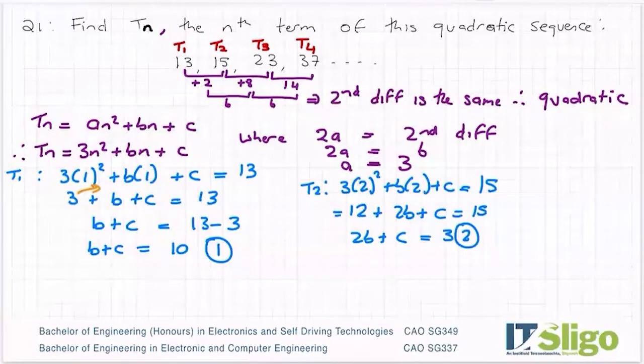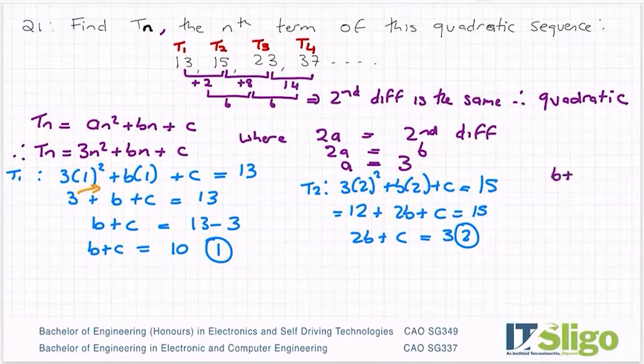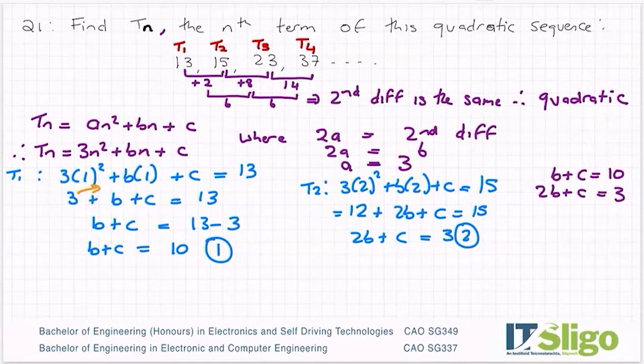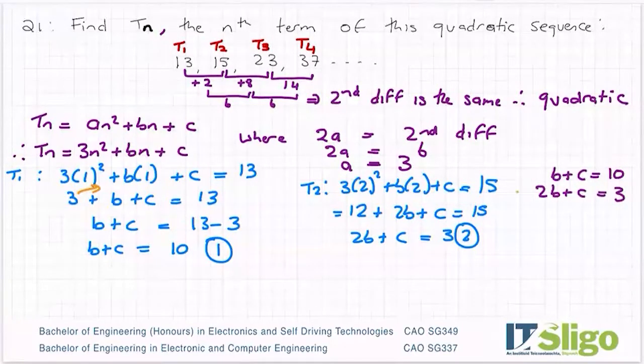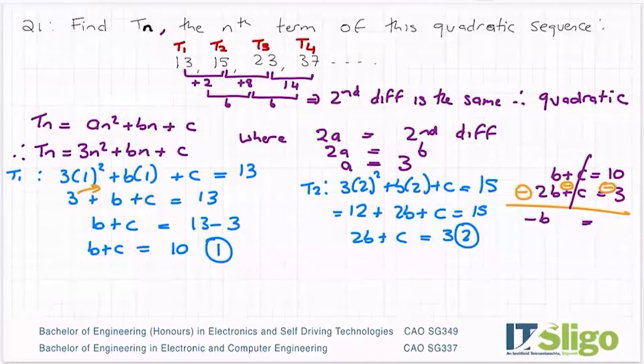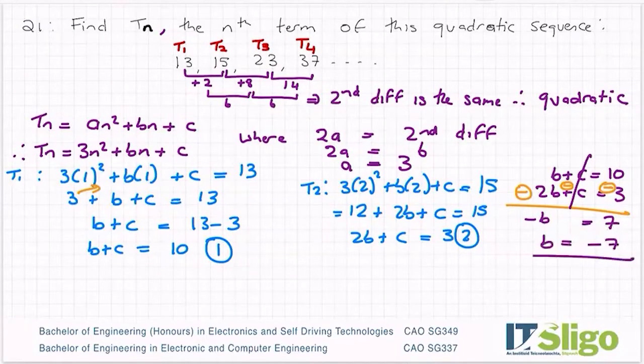So then I go to solve these simultaneous equations. So I bring them together. So b plus c being equal to 10, and 2b plus c being equal to 3. And generally, the simultaneous equations are relatively easy, not like what you're used to. So I am going to change the signs of one of them and cancel the c's. So b minus 2b is minus b, equals 10 minus 3, which is 7, or b is equal to minus 7. So I found out that b is equal to minus 7.